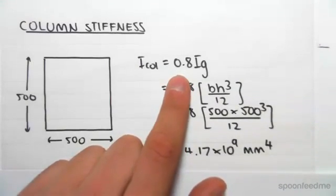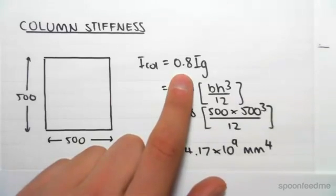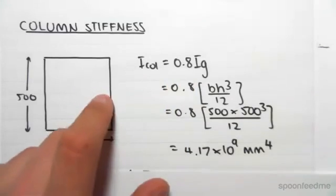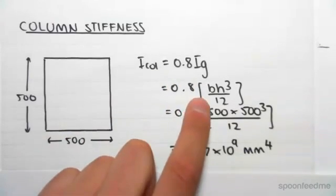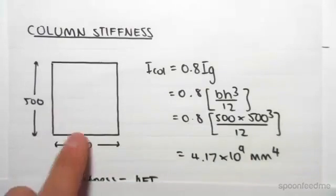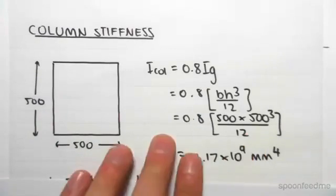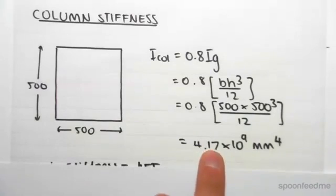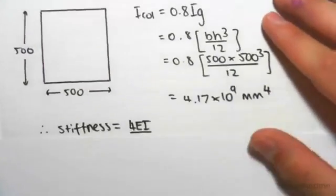The I value of a column is bh cubed on 12. So it's 0.8 times 500 by 500 cubed on 12, which gives us an answer of 4.17 times 10 to the 9 millimeters to the power of 4.